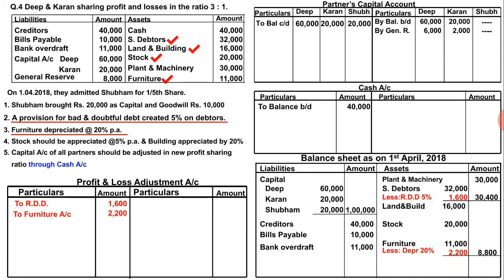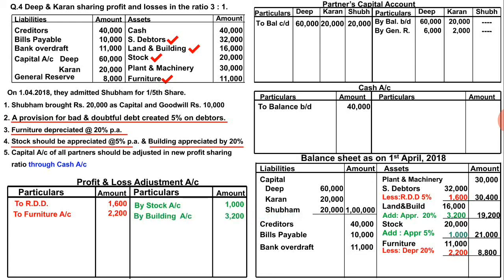Moving to the fourth adjustment. First part: stock should be appreciated by 5%. On stock of 20,000, 5% gives 1,000. Since it is appreciated, I will add it — stock increases. Because it is a profit, it is posted to the credit side of the profit and loss adjustment account. Second part: building is appreciated by 20%. Building is 16,000, so 20% gives 3,200; after adding, building becomes 19,200. Again, it is a profit for the firm, so credited to the profit and loss adjustment account.